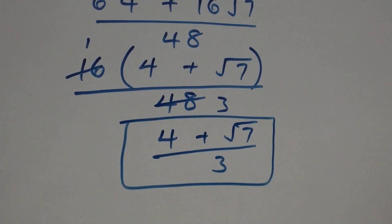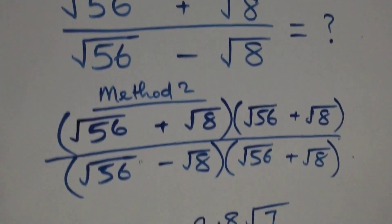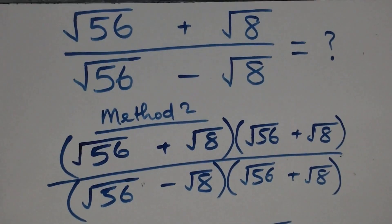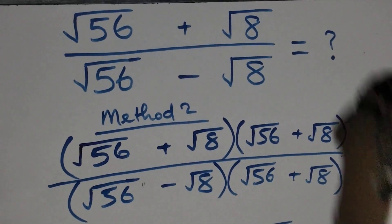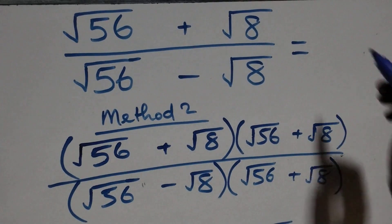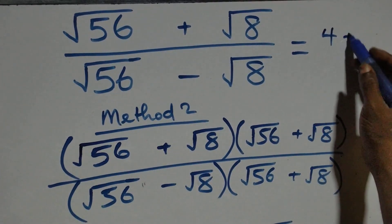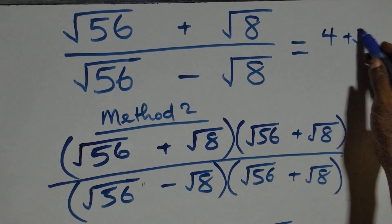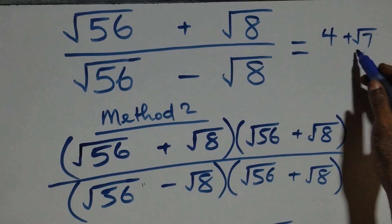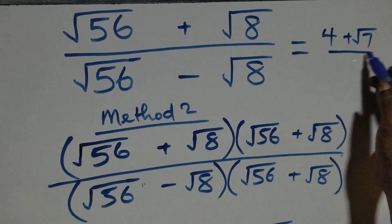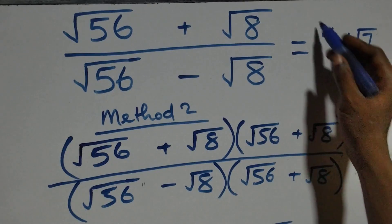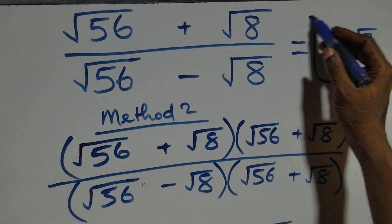Hence we can conclude that the simplified form of this given problem is four plus root seven, all over three. Thank you for watching.